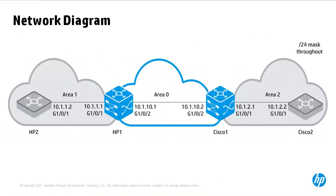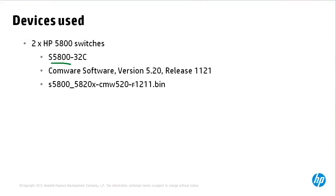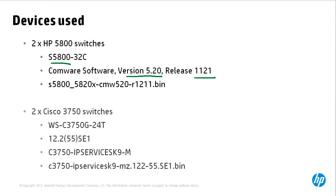All ports in this topology are configured as routed ports — in other words, IP addresses are configured directly on the interface. On Gigabit 1/0/2 on HP1, an IP address of 10.1.10.1 has been configured. On Cisco 1 Gigabit 1/0/2, an IP address of 10.1.10.2 has been configured, and so forth. Both Comware and Cisco switches support routed ports, depending on individual hardware. The two HP switches are 5800 series switches running Comware version 5.20.1121. The two Cisco switches are 3750s running version 12.2(55)SE IP Services IOS.